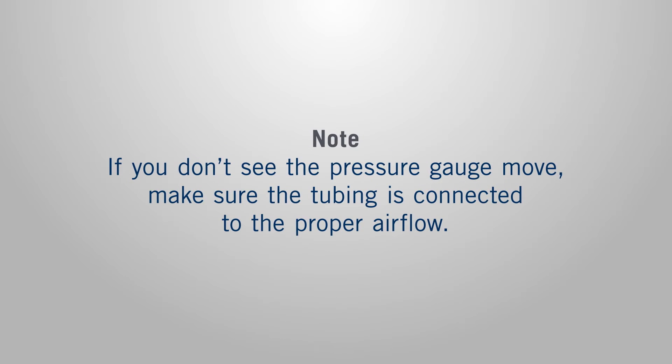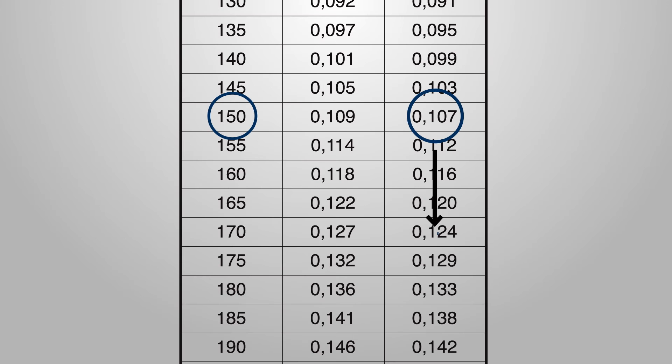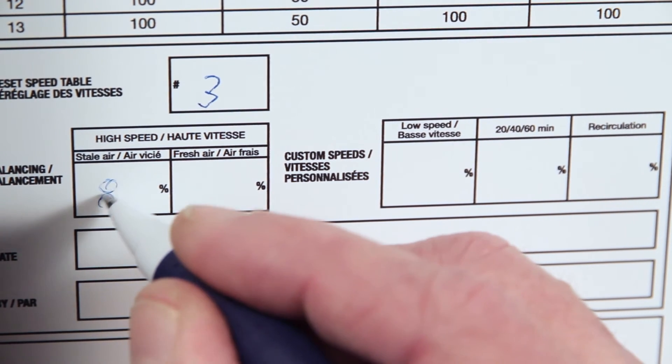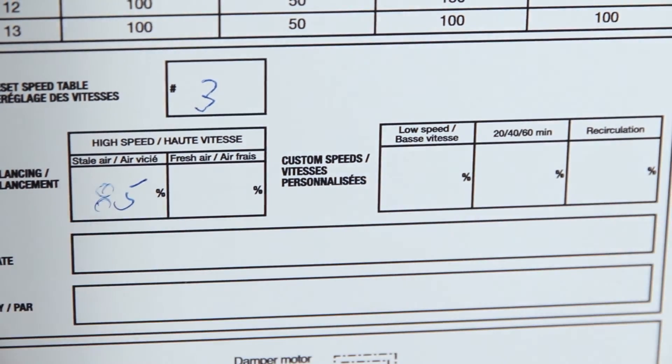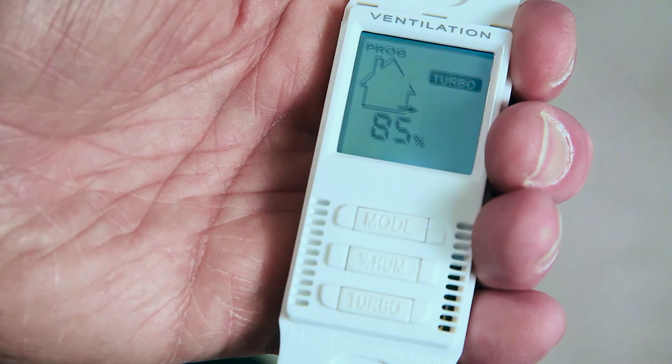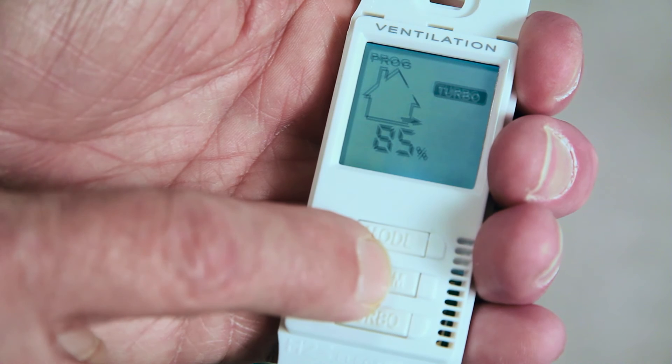If you don't see the pressure gauge move, make sure the tubing is connected to the proper airflow. Check the pressure gauge along with the unit balancing chart until the desired airflow is reached. Take note of the setting value at this step, as it will disappear by pressing the accept button. Press the middle button to accept the chosen percentage.